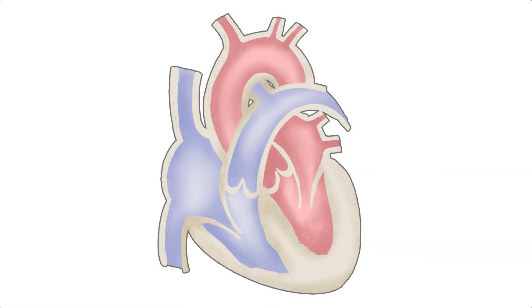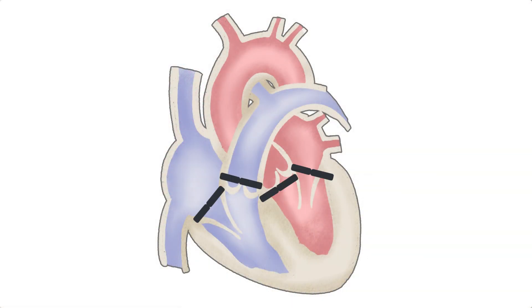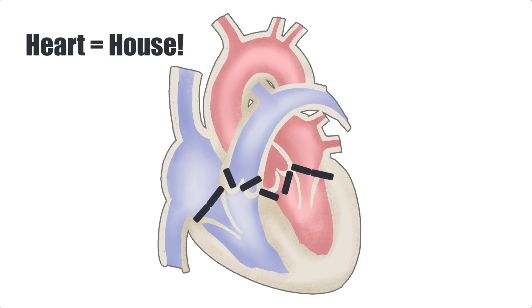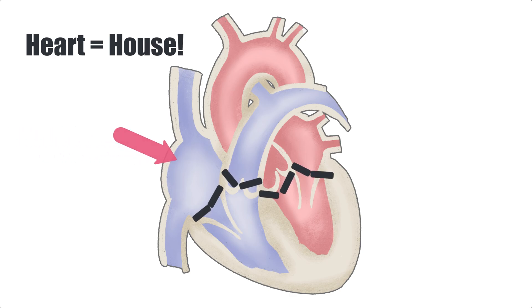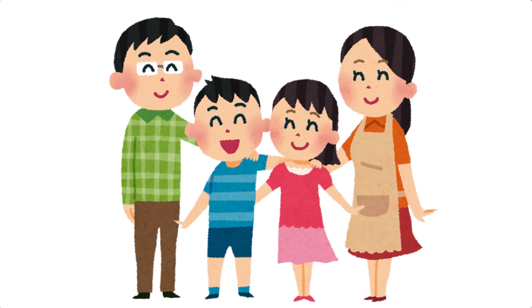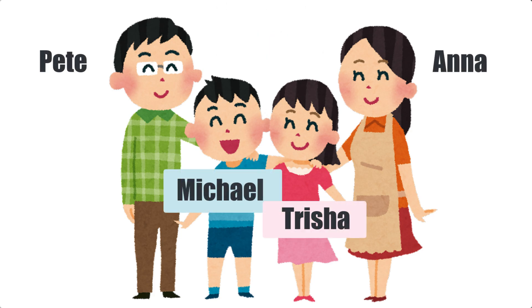Picture this: we have the heart, which has chambers and valves. The valves are really just like little doors that open and close to allow blood to move around the chambers. So suddenly this heart feels like a little house — it's got little rooms and doors, and it even has electricity. Inside the house we have family members: two adults, Anna and Pete, and two children, Michael and Tricia.